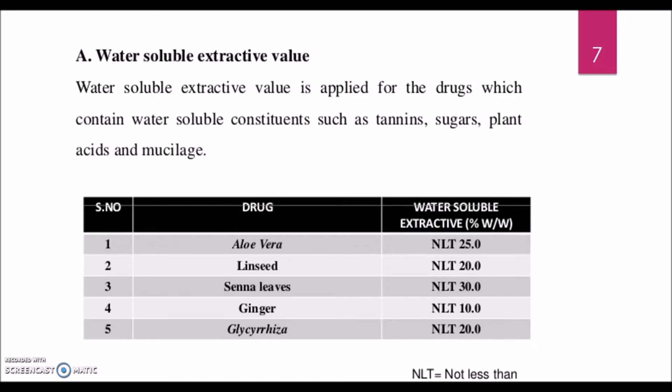Water is the most preferable solvent because it is safe, easily available, and economical. As water is polar in nature, it can extract polar constituents such as tannins, sugars, glycosides, plant acids, and mucilage. I have given examples of extractive values already standardized and listed in standard journals. So when we do the extractive value for aloe vera, we can refer to these standard values to check if the product is of pure quality and free from adulteration.